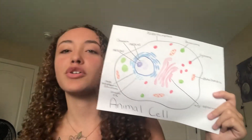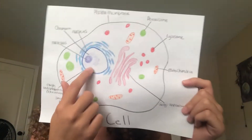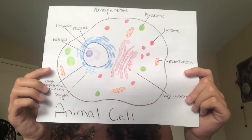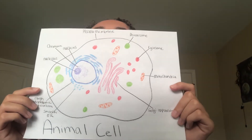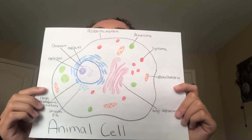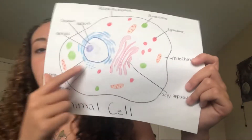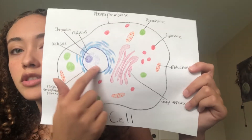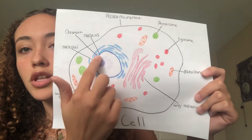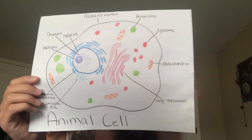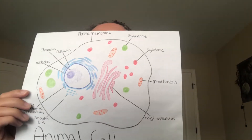This purple dot inside the nucleus is the nucleolus, and it helps in protein synthesis and production of ribosomes. These things outside of the nucleolus are called the chromatin, and it compresses the DNA tightly so it can fit inside the nucleus.